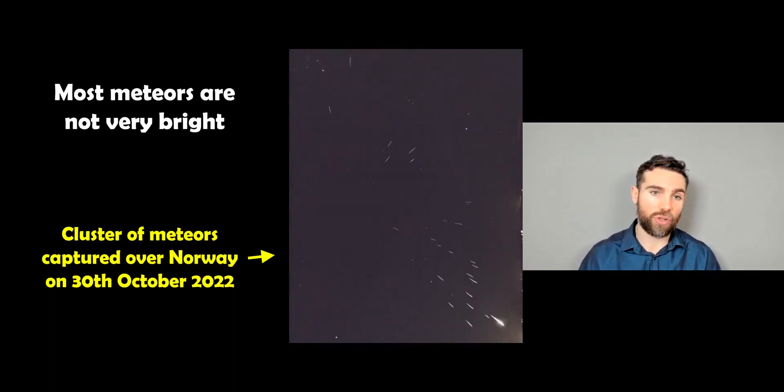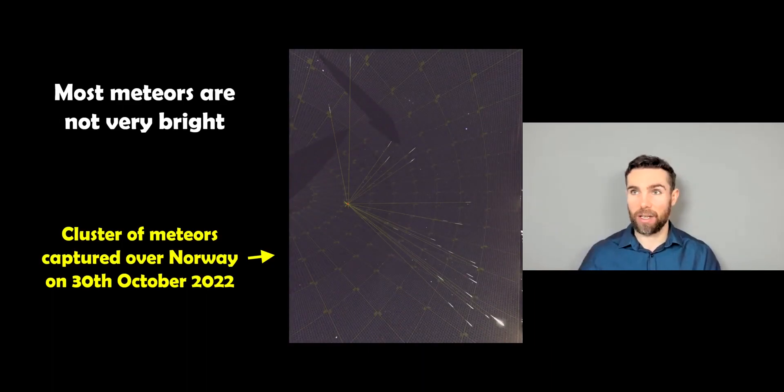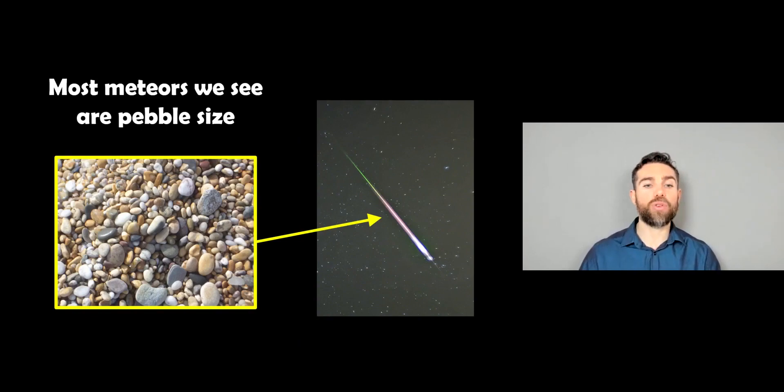You can see they just leave a little bit of a streak there. This was a fairly rare cluster of meteors, but if you've seen them they'll look a little bit like this. They're not spectacular but they're quite nice to see anyway. Now most of those meteors that are causing those streaks are around about pebble size, so about a centimeter in size is fairly typical for one of these meteors. Typical size: pebble size.